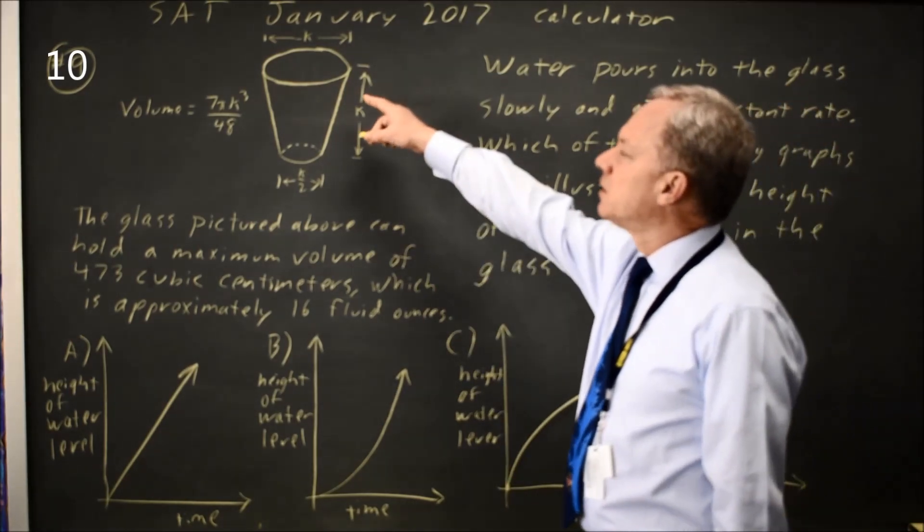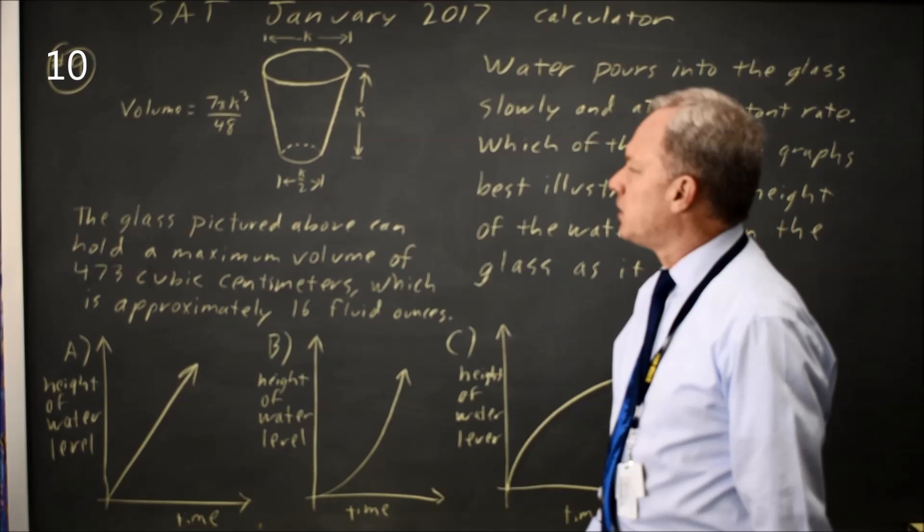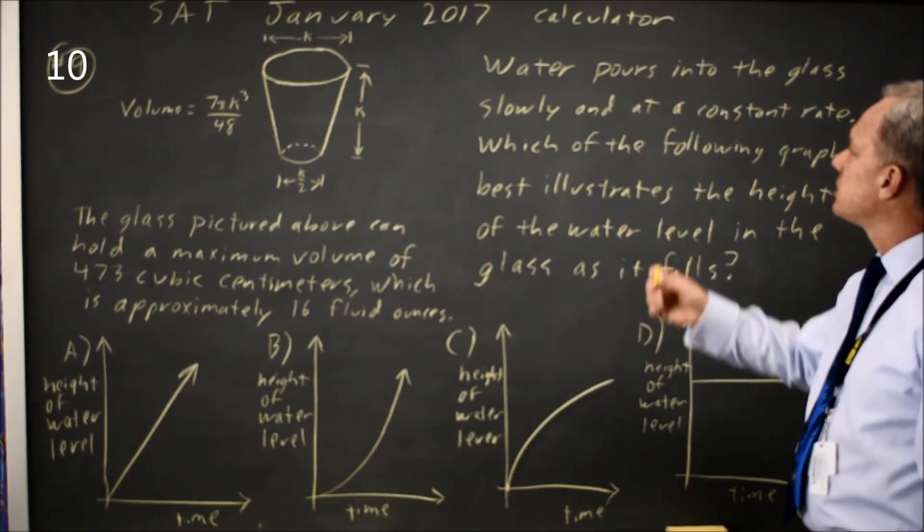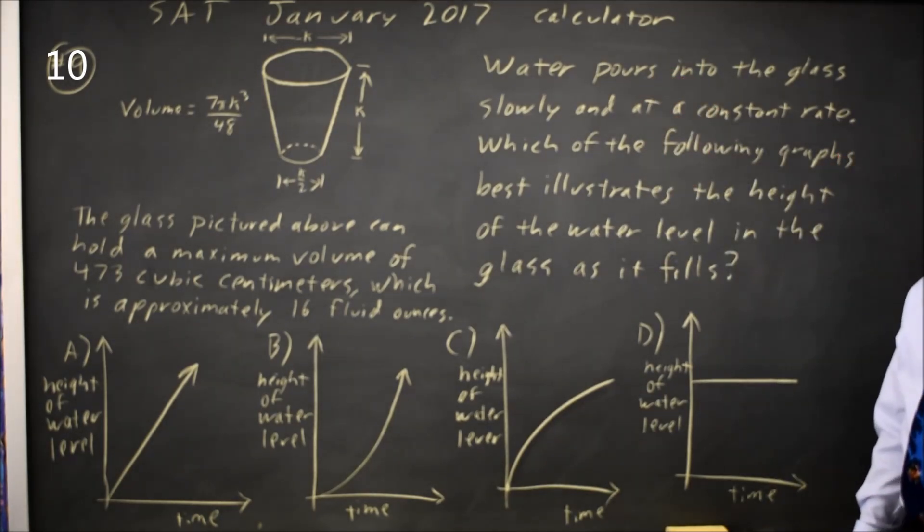College Board gives us a glass in the shape of a portion of a cone and tells the volume is 473 cubic centimeters, which doesn't matter in this case. They say water pours into the glass slowly and at a constant rate. Which of the following graphs best illustrates the height of the water level in the glass as it fills?